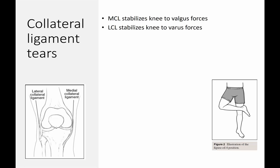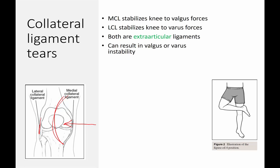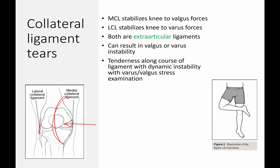On the other side, the LCL stabilizes the knee to varus forces, preventing the knee from bending outward. Both are extra-articular ligaments. If torn, this can result in varus or valgus instability depending on which one is injured. If you have tenderness along the course of the ligament and positive dynamic instability on varus or valgus stress testing, that suggests a tear — always compare to the other knee. To palpate the LCL, put the patient in a figure-of-four position, which puts it under tension.